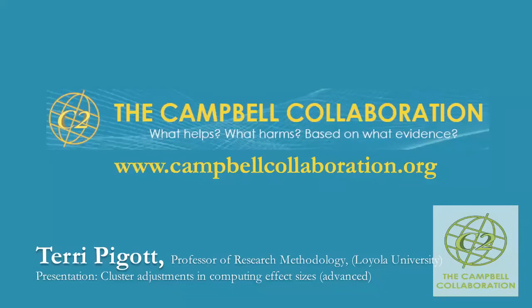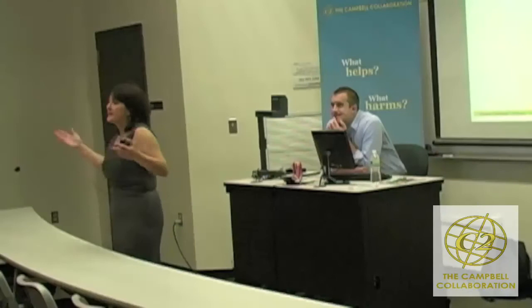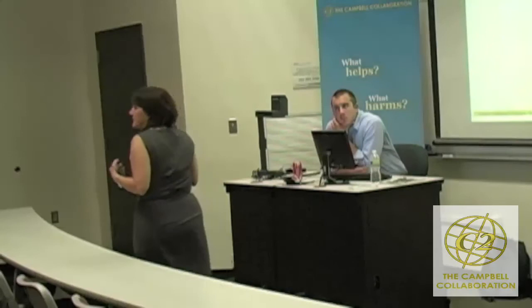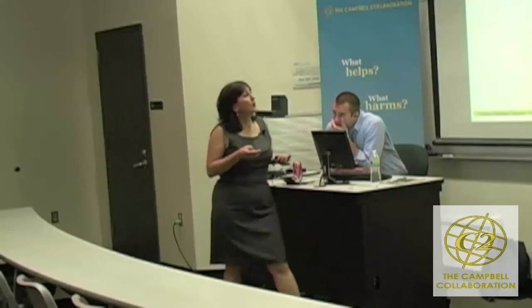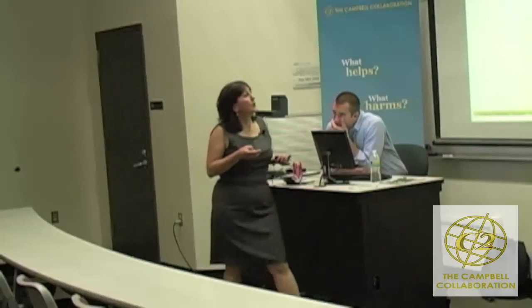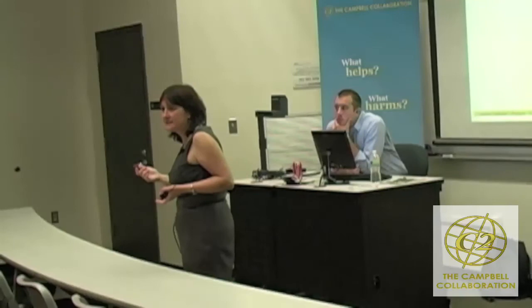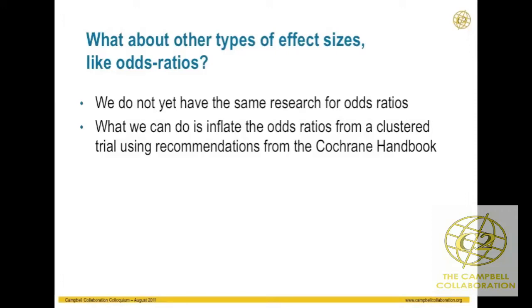Everything we've talked about so far is just about standardized mean differences — nothing about other effect sizes. But that doesn't mean we throw them out. If we happen to be looking at odds ratios, for example, what we can do is adjust the sample size for the clusters. I'm going to show you what the Cochrane Handbook suggests in this particular case using an odds ratio.